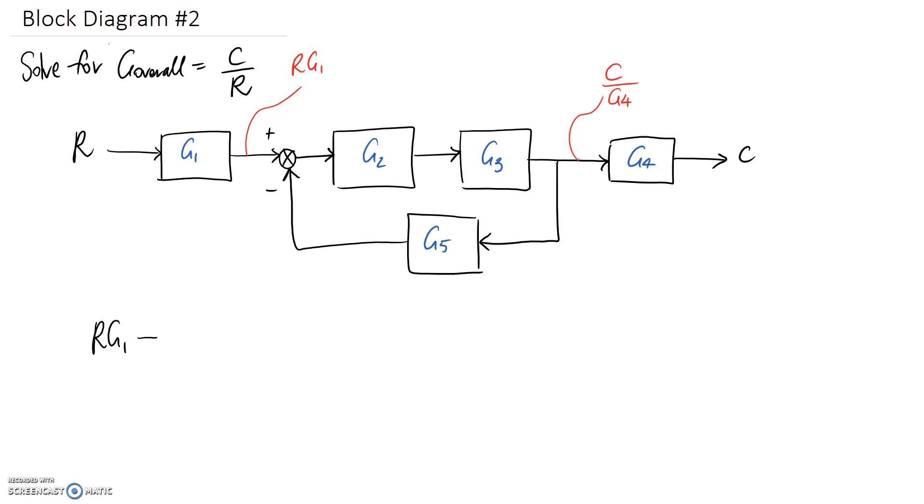So that means that the signal at this point in our system is going to be c divided by g4. We still need to keep going because we're trying to get to this point here. Now this is the signal all across this part. So this time though if we go down this branch we're going forward along our arrow. So if we're going forward that means we're back to multiplying in order to pass across this block.